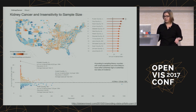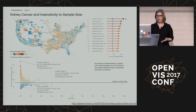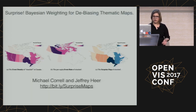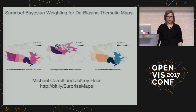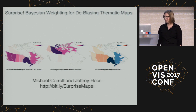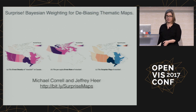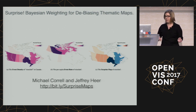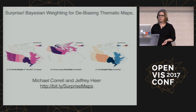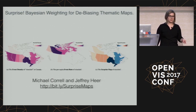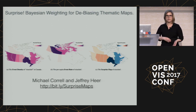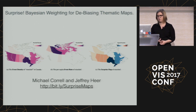Gelman has some suggestions for fixing this problem. One solution I've seen recently that I liked is this surprise Bayesian weighting for de-biasing thematic maps. It takes the absolute numbers — not good — and the percentages, which have high variance in small population areas, and does a Bayesian weighting to ask: is this a surprising result given that underlying distribution?